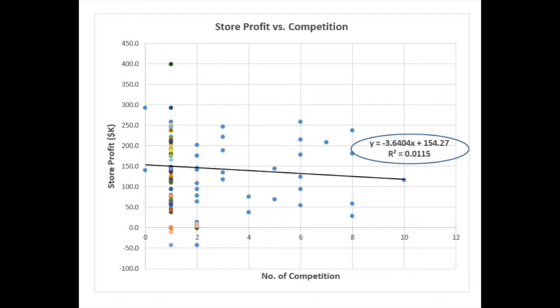You can put a trend line through the data points. When you look at the equation for y — the store profits — the value for r squared, which represents the fit, is 0.01. This means only 1% of the variations in store profits can be explained by the variations in the number of competitors. It has little effect on store profits.